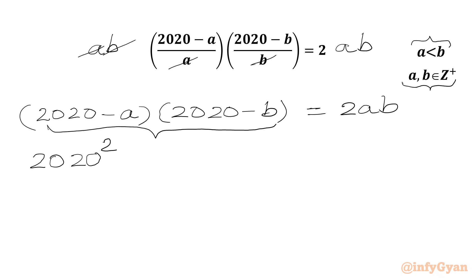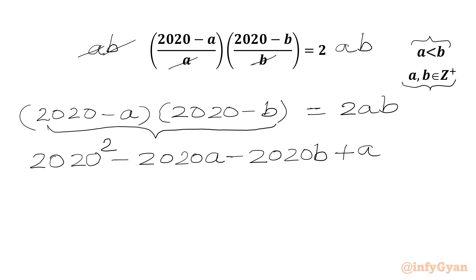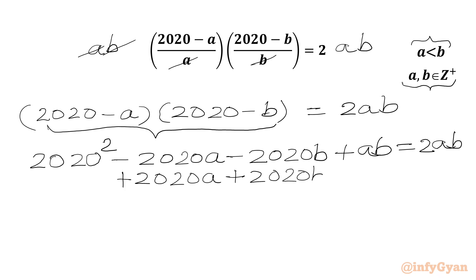Continuing the expansion: minus 2020b, then minus a times minus b gives us ab, equal to 2ab. Now we add 2020a and 2020b, and subtract ab from both sides, writing plus 2020a plus 2020b minus ab on both sides.